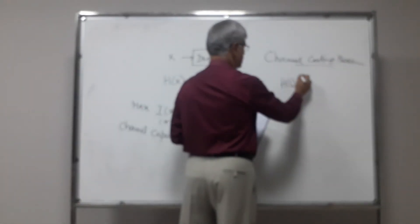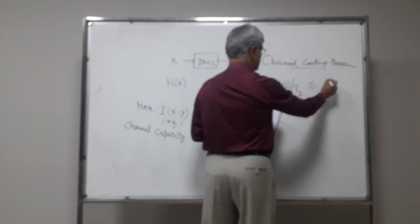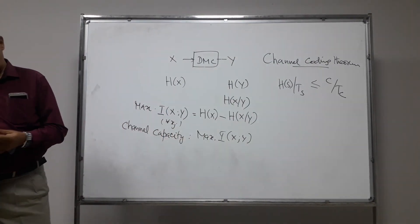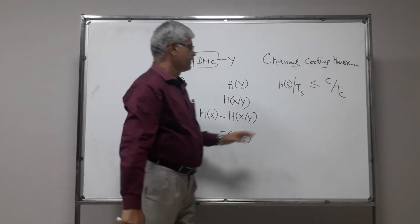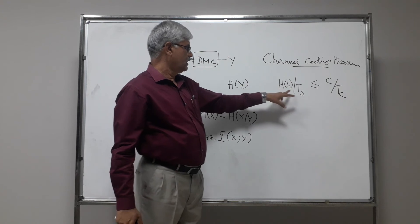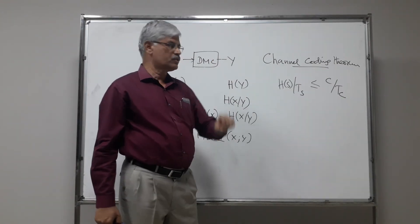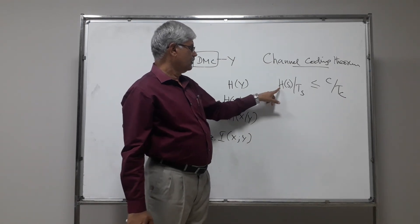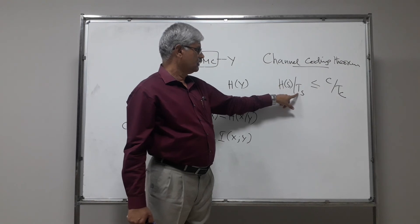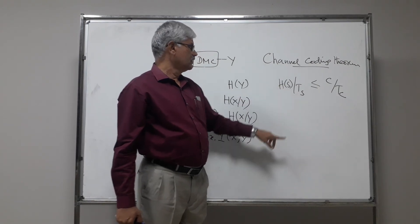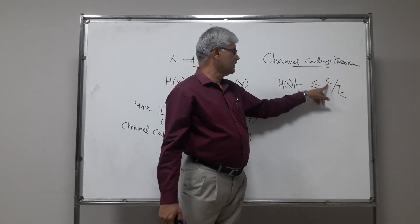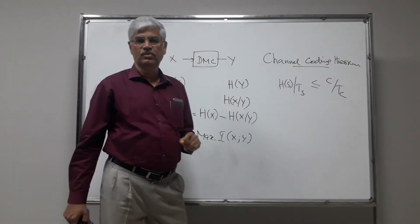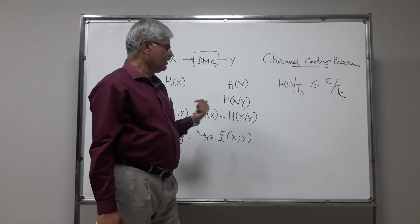According to the channel coding theorem, H of x divided by the duration of the source symbol — which is bits per symbol — is always less than or equal to C. Here, H of x is the entropy of the source, and this ratio represents the source rate in bits per symbol. C is the capacity of the channel, and this expression gives the transmission usage of the channel.